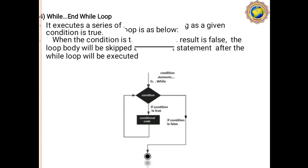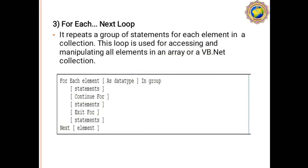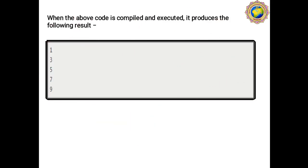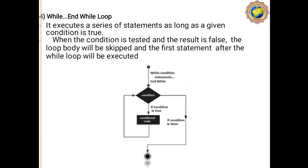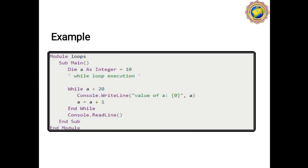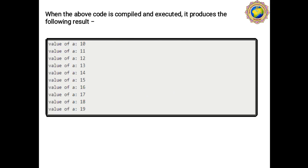In this lecture we covered: first, the For Each Next loop — its description, syntax, example, and output (1, 3, 5, 7, 9); then the While End While loop — its description, flowchart, syntax, example, and output (10 through 19). These are the two main loop concepts covered today.